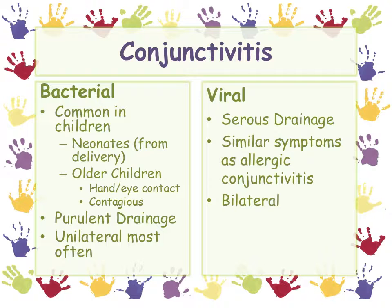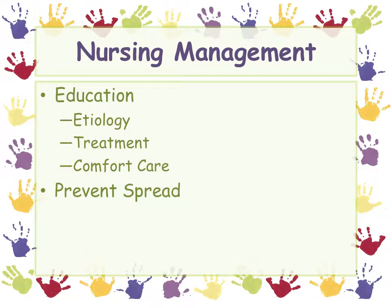Look at the differences between the two. Viral conjunctivitis is often adenovirus. With bacterial, it can be staph, strep, or a variety of organisms. So viral: adenovirus; bacterial: strep, staph, or any bacteria. What are we going to do? You need to know the cause first. Hand washing is an important piece of prevention of spread. If it's viral, there's not a lot you can do, but if it's bacterial the treatment is antibiotic drops or ointment. Make sure parents know how to administer eye drops or eye ointment.